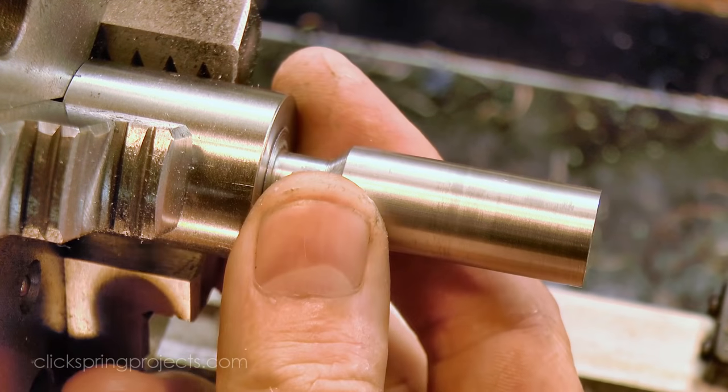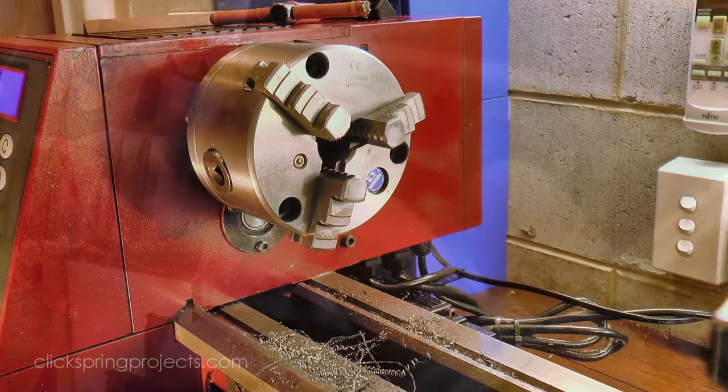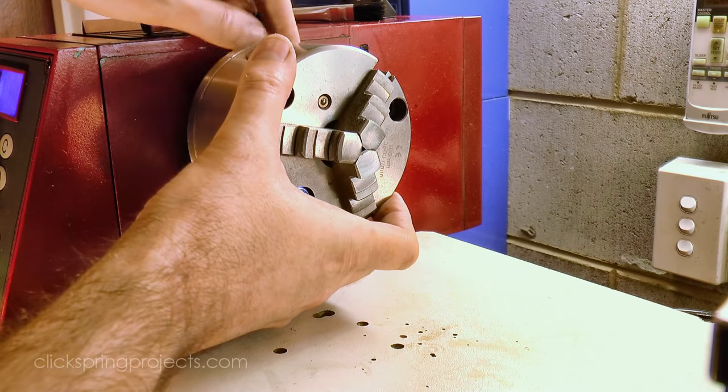The cutting teeth need to be concentric with this shank, so I'm removing the 3 jaw chuck, and using an ER collet chuck from here on, to give a better result.